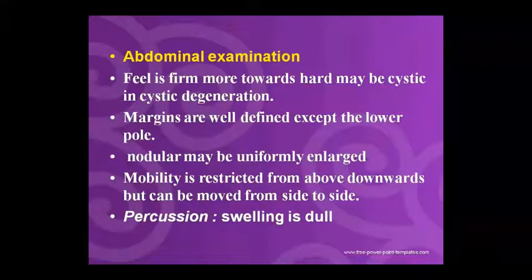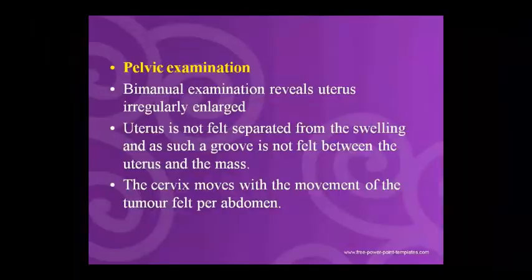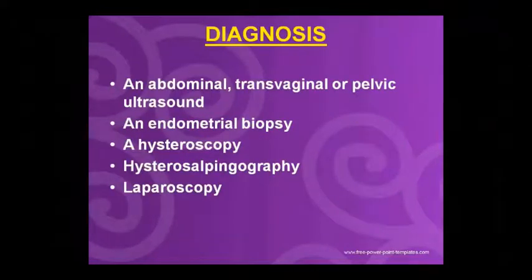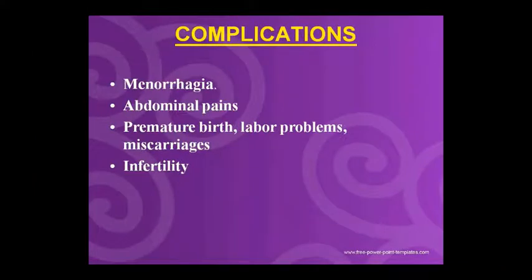On examination, side-to-side movement, percussion revealing dull swelling, pelvic examination, bimanual examination, and an irregular enlarged uterus are noted. When the tumor is felt per abdomen, the cervix moves — this helps diagnose it. Diagnostic methods include abdominal and transvaginal pelvic ultrasound, endometrial biopsy, hysteroscopy, hysterosalpingoscopy, uterus and fallopian tube salpingography, and laparoscopy.